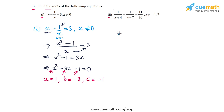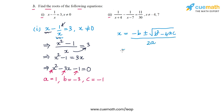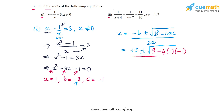The roots are given by x = (-b ± √(b² - 4ac)) / 2a. Plugging in the values, we get -b = +3 (since b = -3), and then b² = 9, minus 4 times a (which is 1) times c (which is -1), all divided by 2 times a, which is 2.